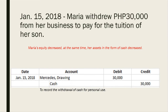On January 15, Maria withdrew 30,000 pesos from her business to pay for the tuition of her son. In this case, Maria's equity decreased and at the same time her assets in the form of cash decreased. The journal entry for January 15, 2018, is: debit Mercedes drawing and credit cash for 30,000 pesos, to record the withdrawal of cash for personal use.